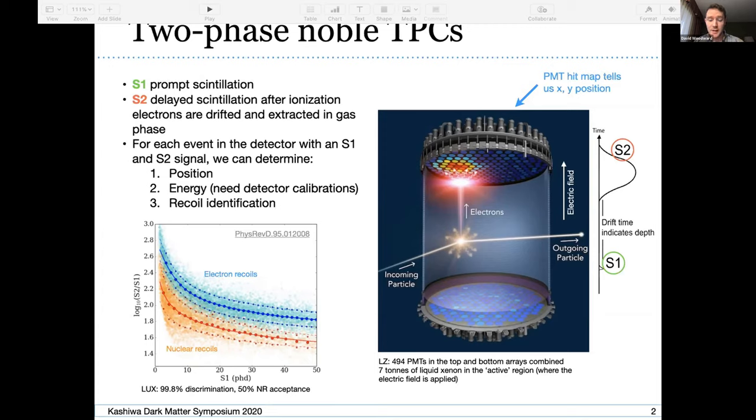Just to mention as well, LZ is a liquid xenon TPC so it will utilize seven tons of liquid xenon in this active region where the electric field is applied to drift the ionization electrons, and utilizing almost 500 PMTs in the top and bottom arrays.